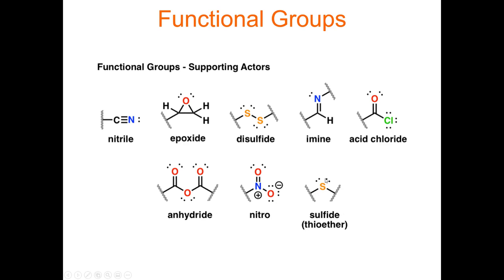Here are some other functional groups we're not going to focus on, but there are more categories for organic molecules: a nitrile group, an epoxide (which has a triangle shape), a disulfide, an amine versus an amide, an acid chloride, anhydride, and a sulfide. There are other groups besides those we're going to focus on, but we'll concentrate on the main functional groups.